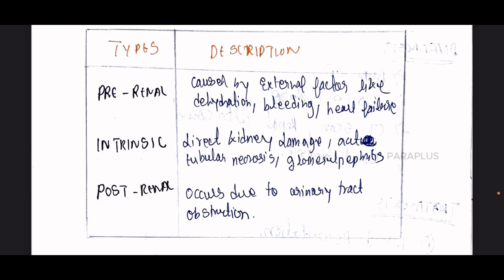Intrinsic is caused by direct kidney damage. It is a condition within the kidney itself, such as acute tubular necrosis or inflammation and infection affecting kidney function.